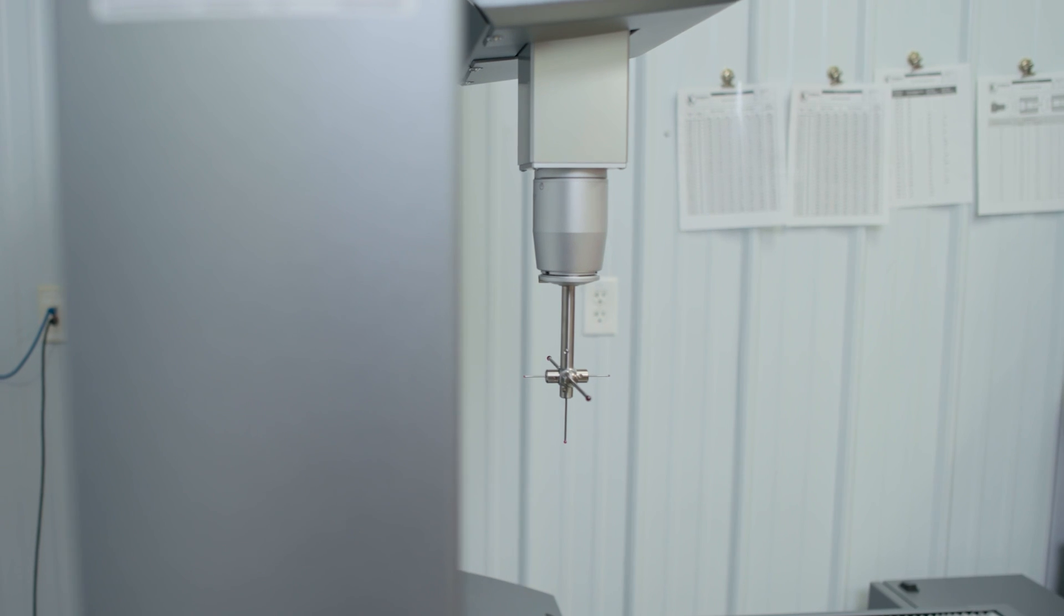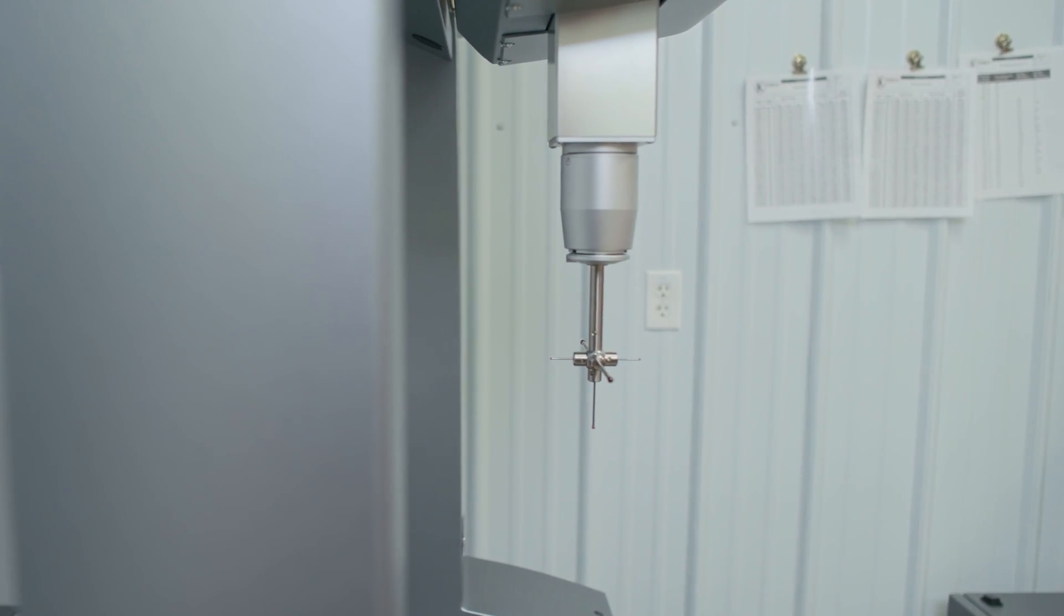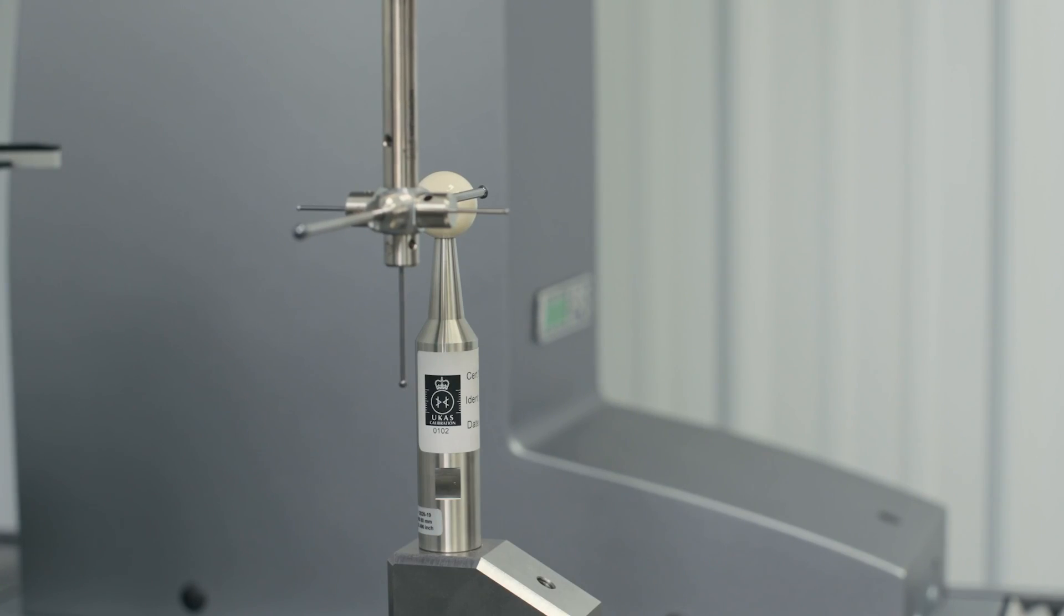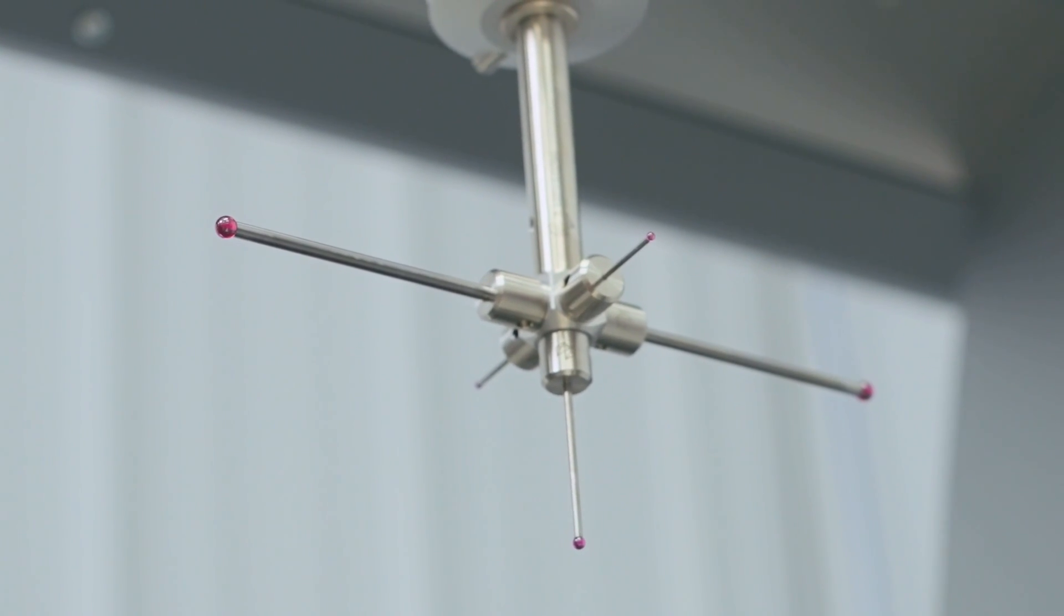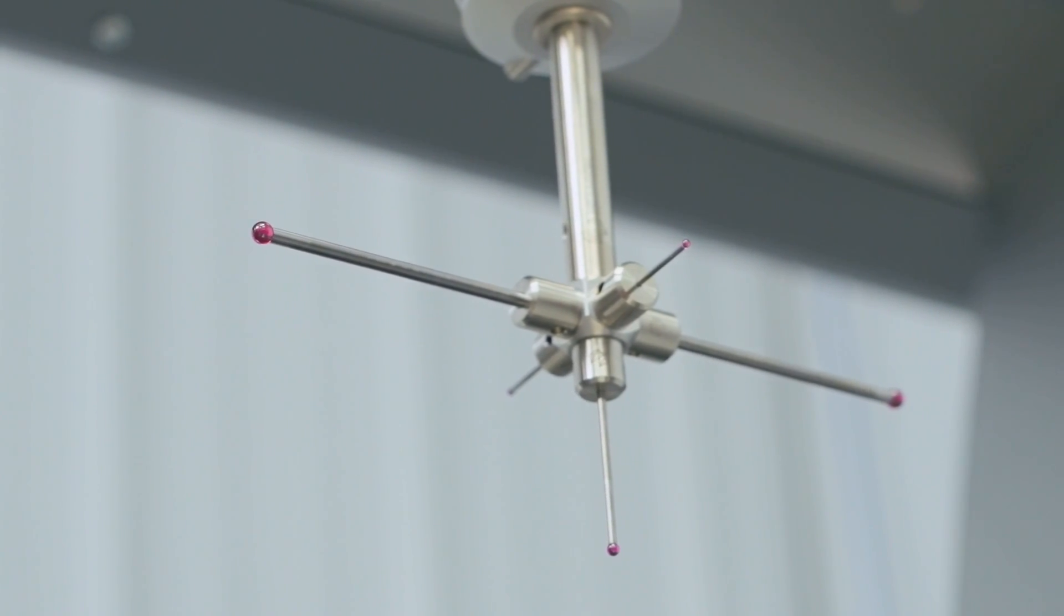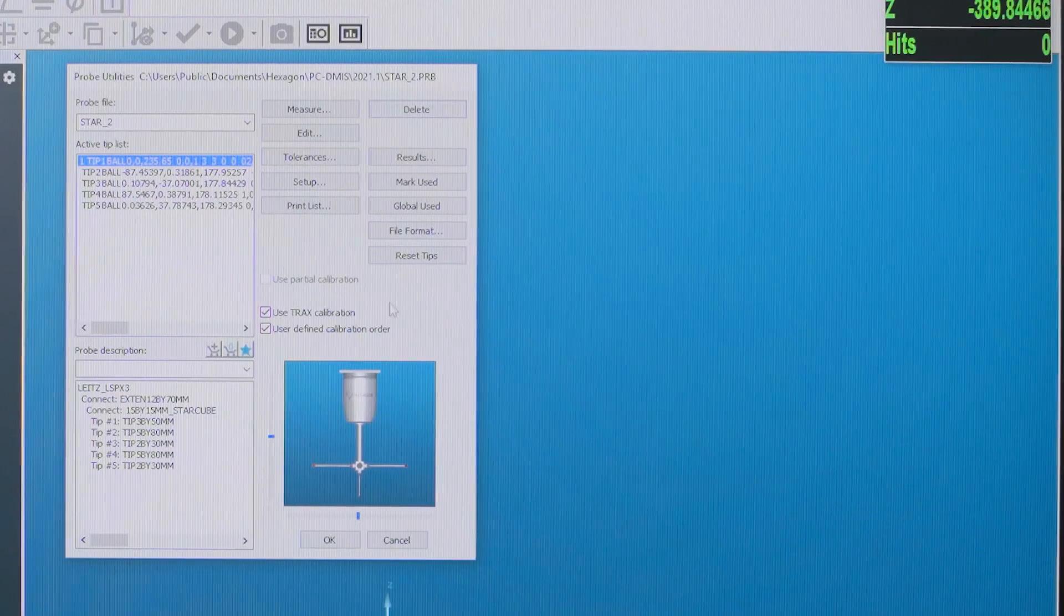Number one is going to be our master tip. When we calibrate this to the sphere, this will be the master probe that all of the other probes will calibrate from that data. So we'll only do this first tip right now.